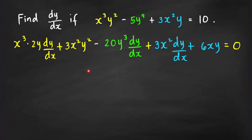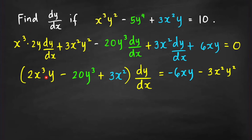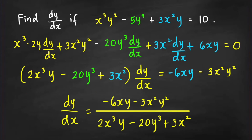We're done with the differentiation — only algebra remains. We isolate all terms with dy/dx: the first term produces 2x³y·(dy/dx), the second produces −20y³·(dy/dx), and the third produces 3x²·(dy/dx). We factor out dy/dx and move all remaining terms to the other side, giving −6xy and −3x²y².